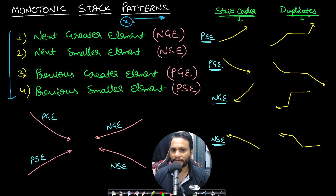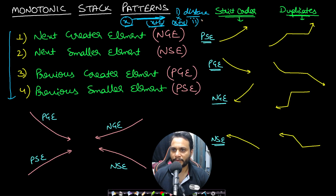The next greater element is defined as the nearest item to the right of x. Two parameters matter: distance (it should be the nearest item) and value (it should be greater, or greater than or equal). The four problems solvable with monotonic stack are: next greater element, next smaller element, previous greater element, and previous smaller element. Each pattern has two equality variants — greater than or greater than or equal to.